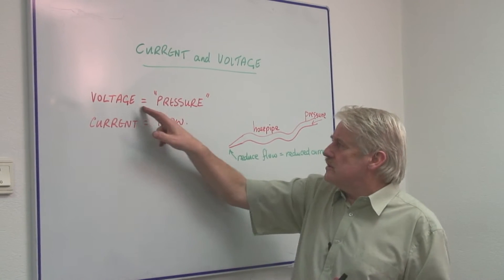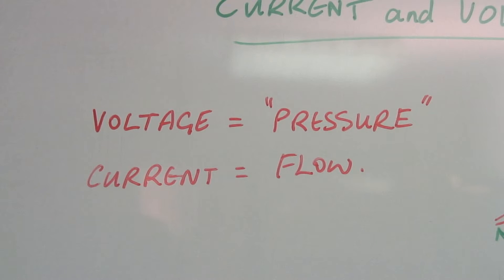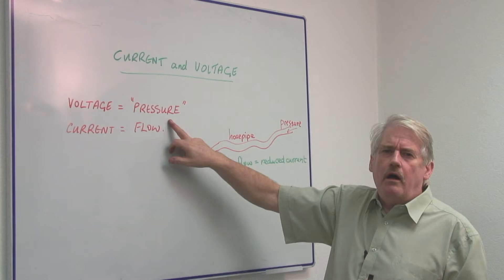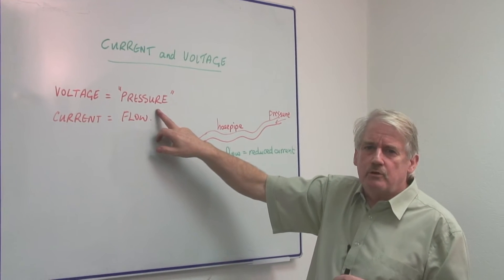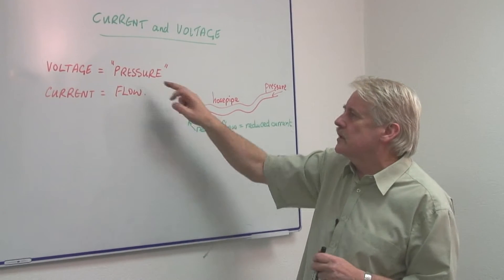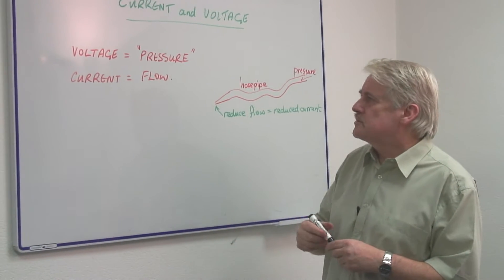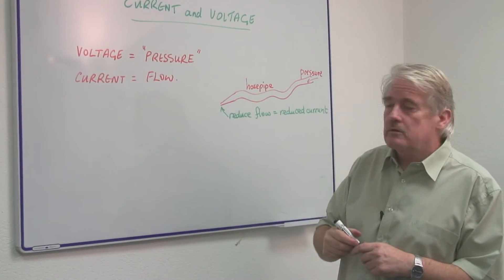Voltage is a kind of electrical pressure. It's how hard the electricity is pushed around the circuit. And it's measured in volts.